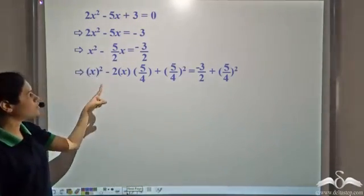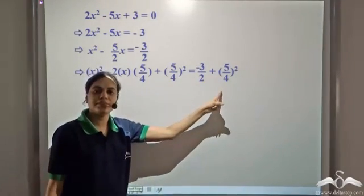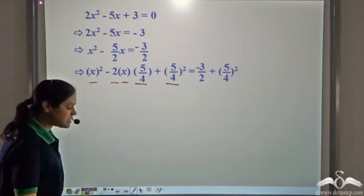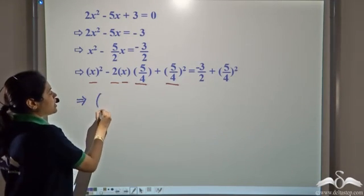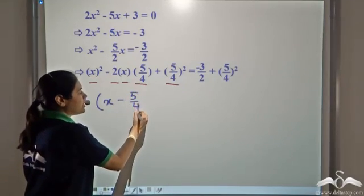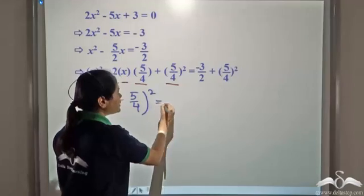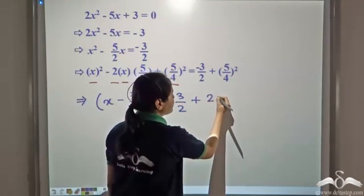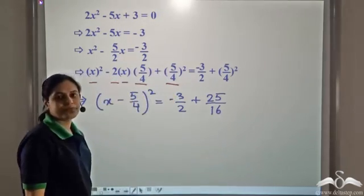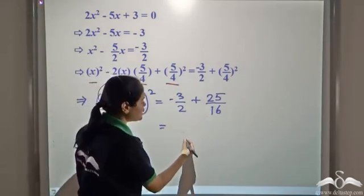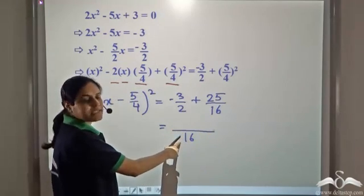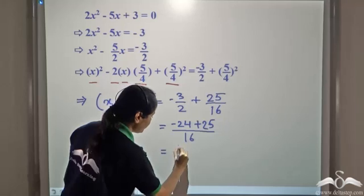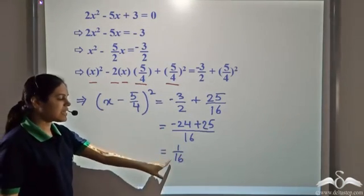Adding 5 by 4 whole square to both sides, the left hand side is now in the form of a squared minus 2ab plus b squared, which we write as x minus 5 by 4 whole square. On the right hand side we have negative 3 by 2 plus 5 by 4 whole square. 5 squared is 25, 4 squared is 16. The LCM of 2 and 16 is 16; negative 3 times 8 is negative 24, plus 25 equals 1. So the right hand side is 1 by 16.